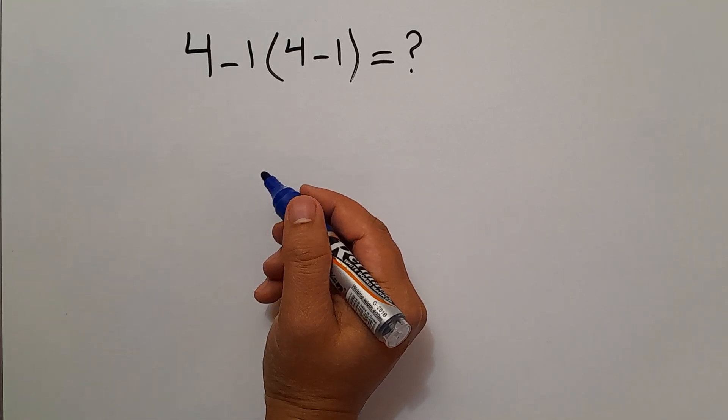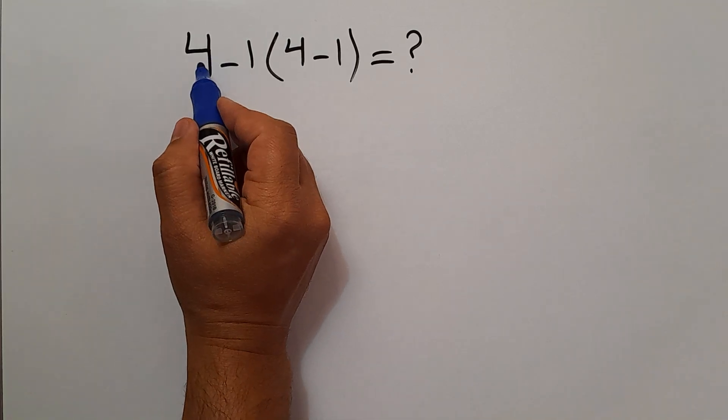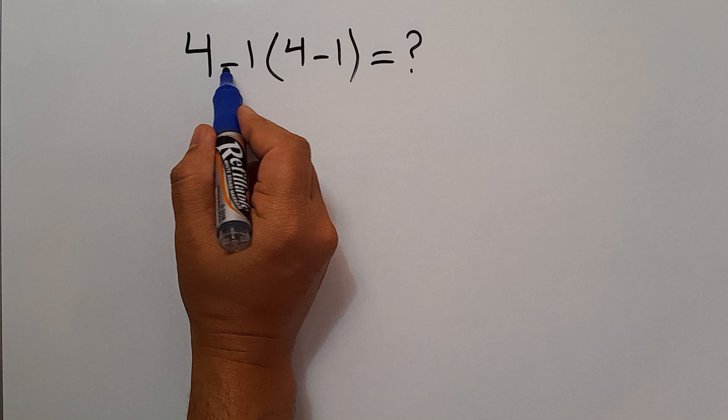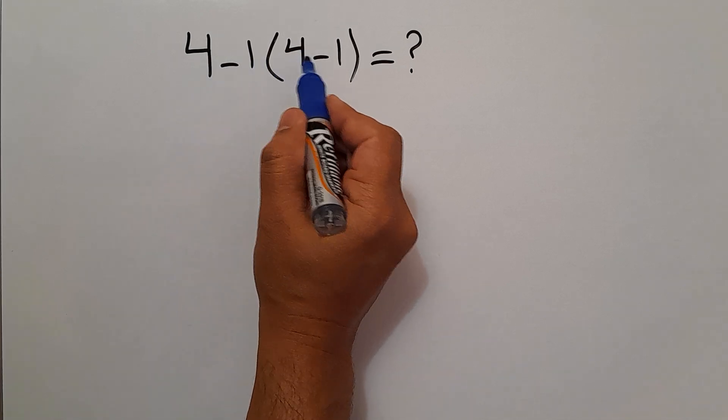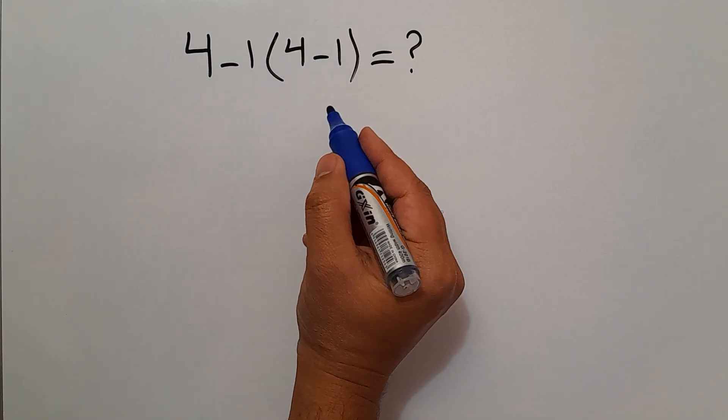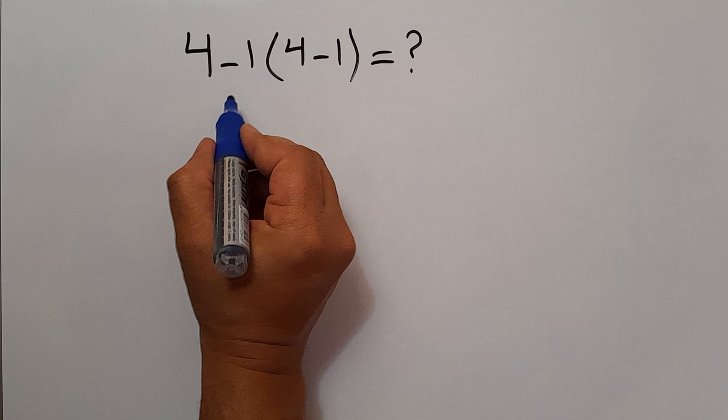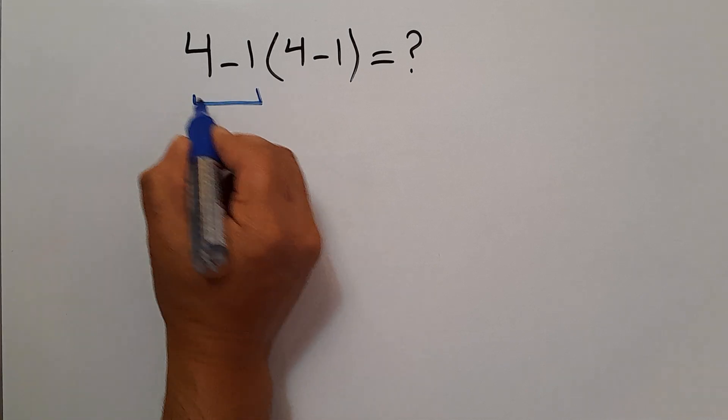Hi everyone and welcome to this video. In this video we want to find the value of this expression: 4 minus 1 times 4 minus 1. Are you ready to solve? Let's get started. 4 minus 1 equals